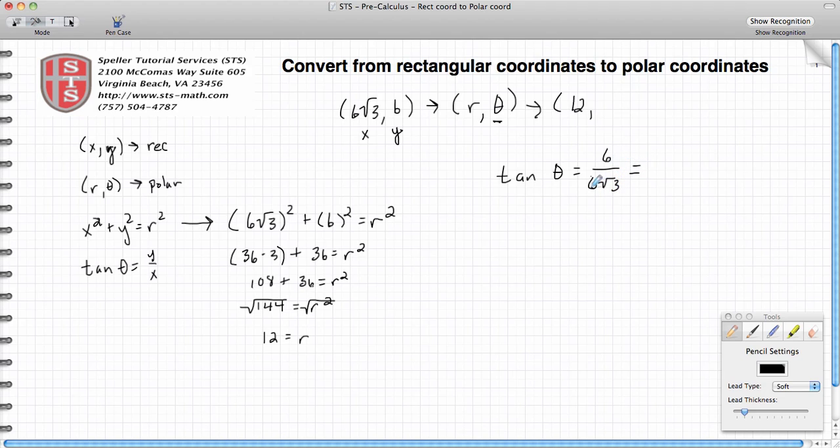These 6s cancel out, so this is really 1 over √3. So I have tan(θ) is equal to 1/√3.